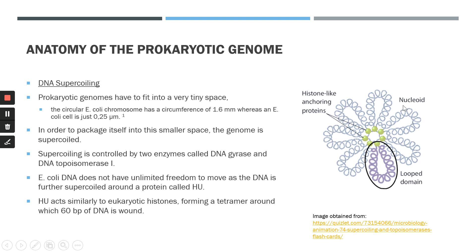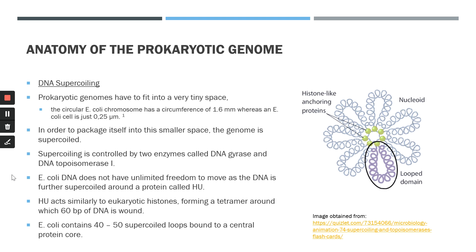These looped domains are anchored or tethered to histone-like proteins, regulating or supercoiling the DNA, all contained within the nucleoid space. E. coli contains about 40 to 50 supercoiled loops bound to a central protein core made up of anchoring proteins such as HU, keeping the genome in a very tightly packaged state. In order for genes to be expressed, these looped domains must be uncoiled or unwound, and this process is regulated by specific enzymes, facilitating gene expression.